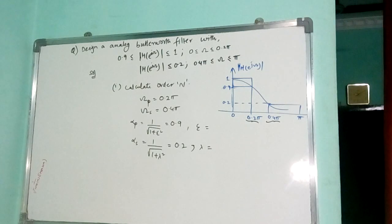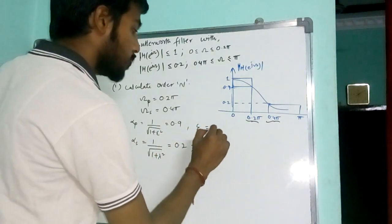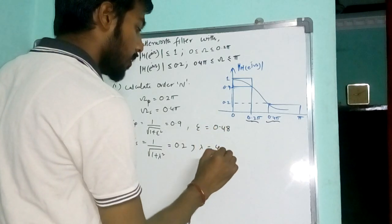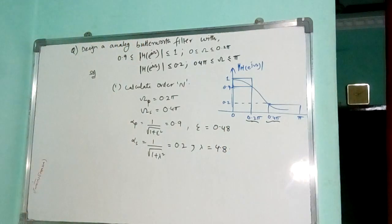So I have done it already. For the values, this value turns out to be 0.48 and this value turns out to be 4.8. Epsilon and lambda values.